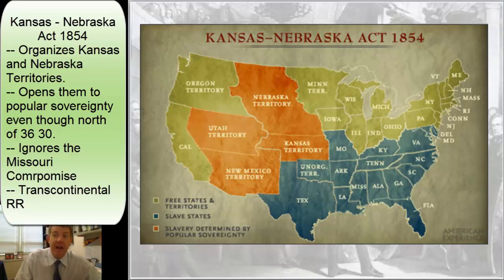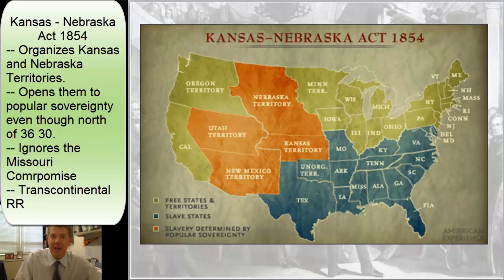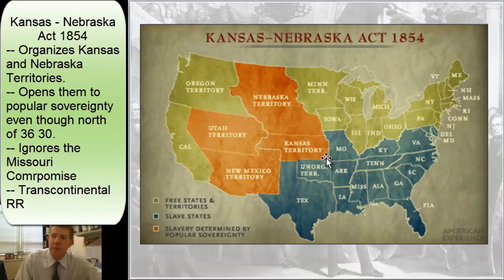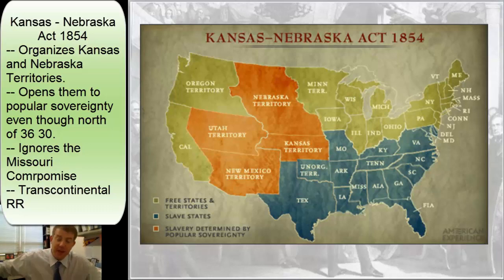The problem with popular sovereignty is that when it's Kansas, it's close enough that Northerners and Southerners began to flood in to claim it for the North or for the South. Kansas became a battleground to compete over for either side. Douglas also legislated right over the top of the Missouri Compromise. The Missouri Compromise from 1820 had managed to hold the Union together for about 34 years, and Stephen A. Douglas simply ignored it.